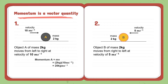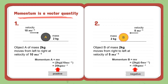Next, for case 2: object P of mass 2 kg moves from right to left at a velocity of 5 m/s. By applying the same formula, we get negative 10 kg·m/s. From both answers, can you see that the momentum of A is positive but the momentum of P is negative? Why is that happening?